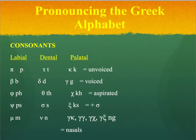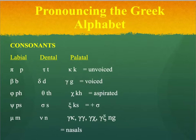Added to these twelve, we have a new classification called nasals. The labial nasal is Mu, pronounced M. The dental nasal is Nu, pronounced N. For the palatal, there are no new letters, but you should know that when Gamma appears in combination with any of the palatals, it's pronounced with an NG sound — so NG, or NGK, or NGG, or NGX. Keep in mind it's not a hard G, but NG.